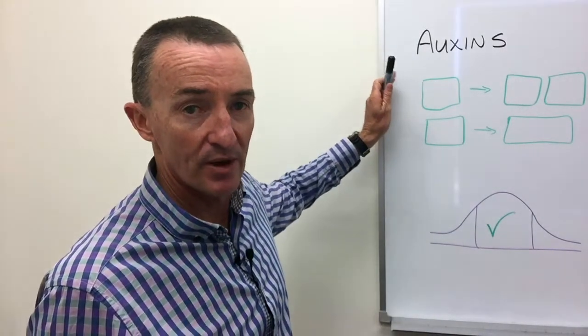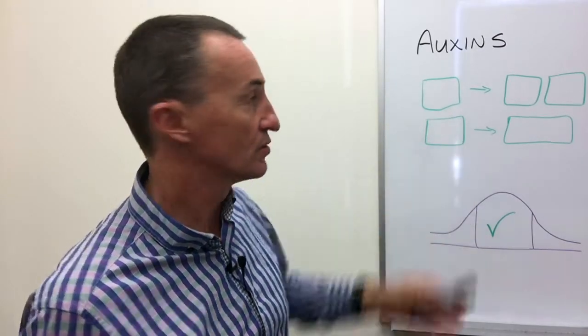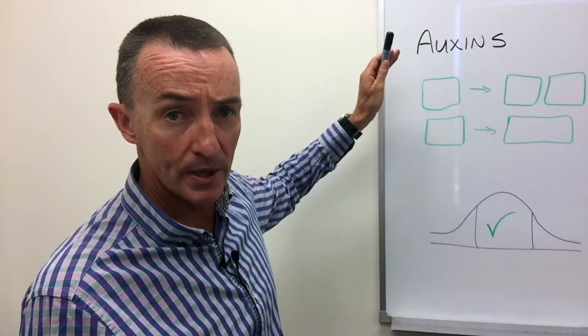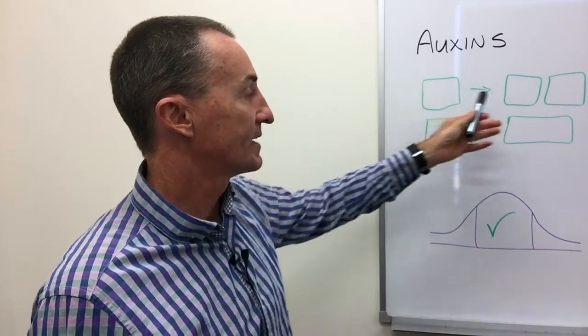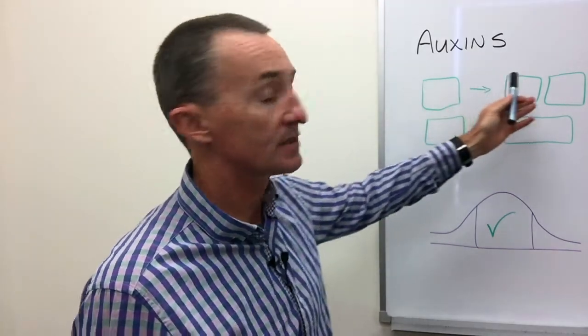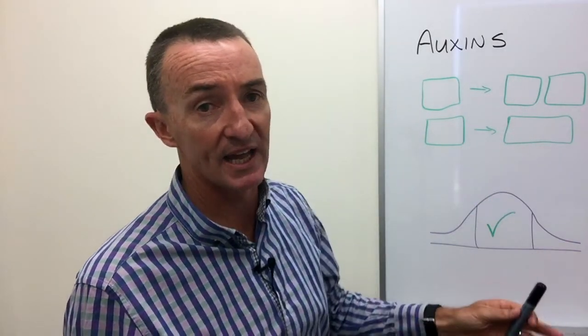Firstly, we have to remember what the naturally occurring auxins do. They are hormones and they regulate a lot of things including cell division and cell elongation.